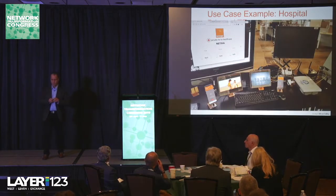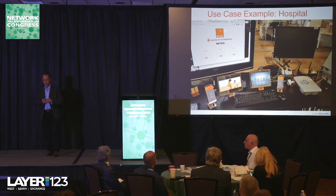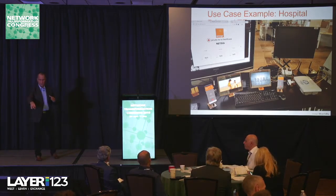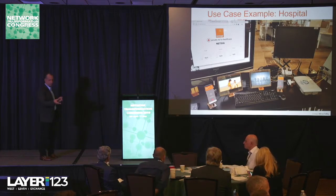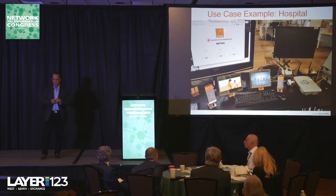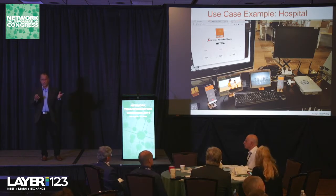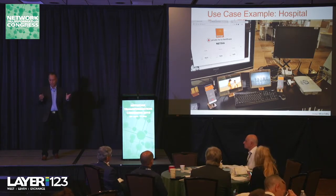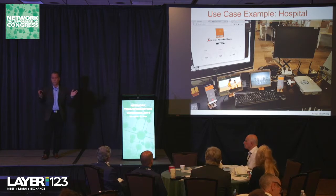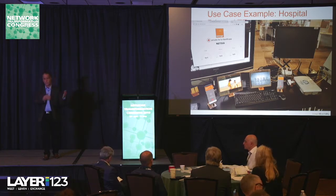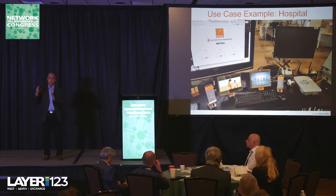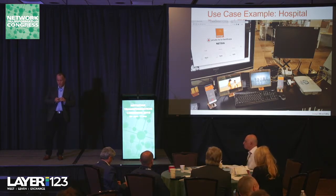This is our actual private LTE setup. The white box on the right is from Acceleron — it costs less than $1,000. The Intel NUCs cost about $500 each. In terms of hardware, you don't need more than $2,000 to set it up, and then you just add the software. The software is the most expensive part of the whole setup.